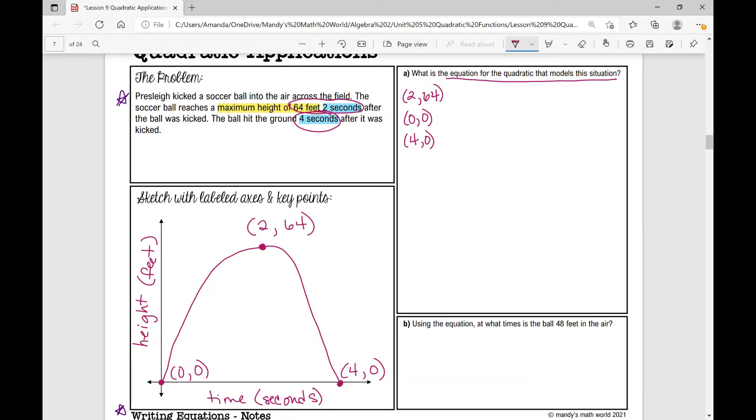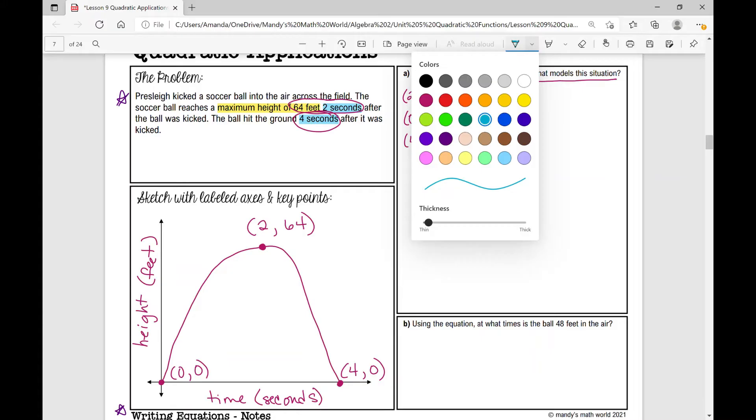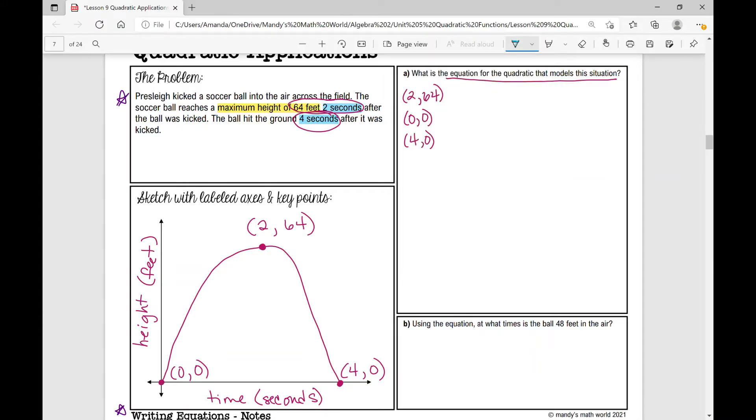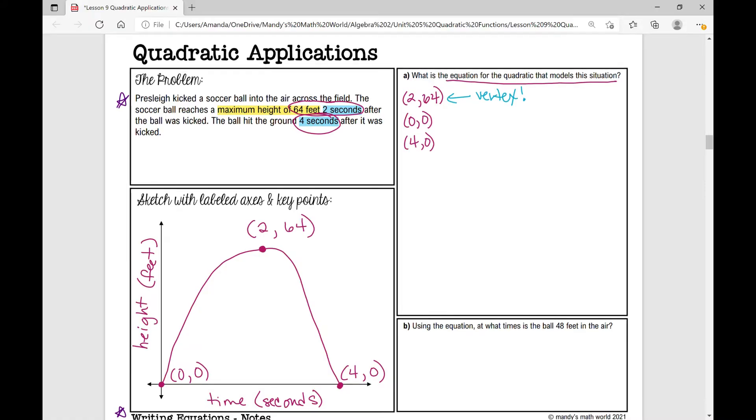So now we're going to go with what we know. We are given the vertex. So if I wanted to write this equation in vertex form, it would look something like this: y equals a, we don't know what that is, but we do know that the vertex moved right two and up 64. How would I write that in vertex form? Right two is x minus two squared, up 64 is plus 64. So we've got a portion of our quadratic written.